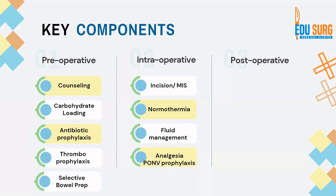Prevention of postoperative nausea and vomiting (PONV) is very important intraoperatively. PONV prophylaxis includes a short dose of dexamethasone at induction and 5-HT3 antagonists such as ondansetron at induction and in the postoperative period. Analgesia must be tailored to the type of surgery — for abdominal surgery, epidurals, TAP catheters, wound infiltration, and patient-controlled analgesia can be used in combination as multimodal analgesia. These intraoperative measures help mitigate the stress response and support faster recovery.